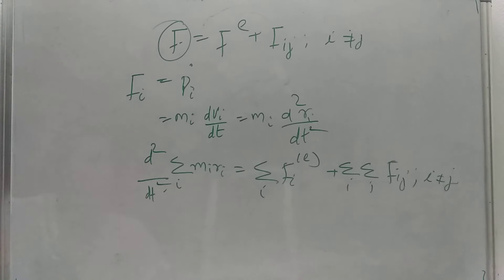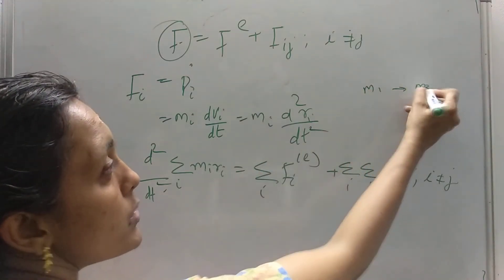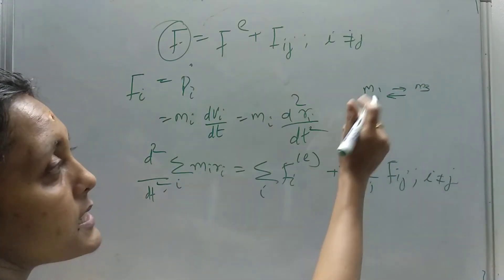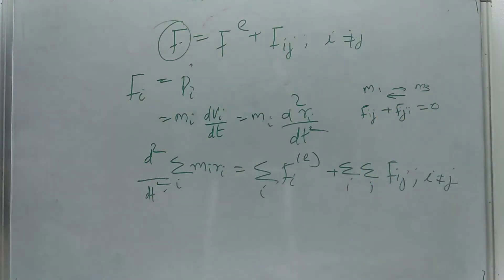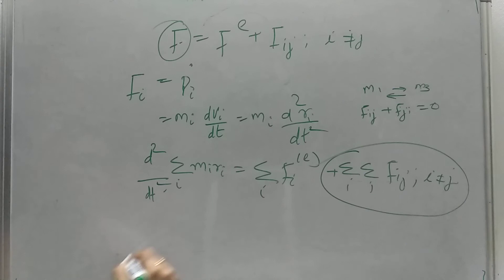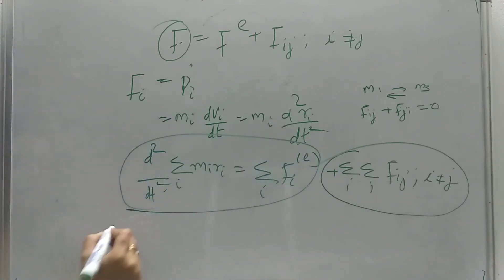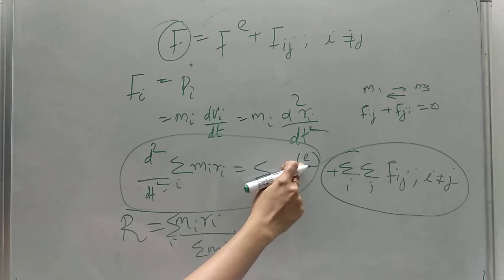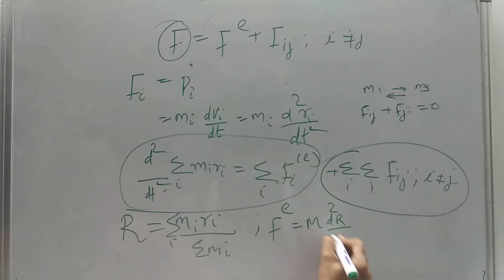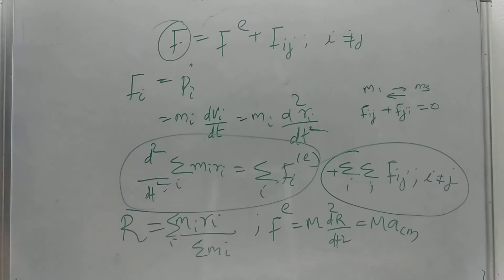Now, we always have equal and opposite forces — Newton's third law. The force M1 exerts on M3 and the force M3 exerts on M1 are equal and opposite, so they cancel out. Since F_ij + F_ji = 0, the internal forces vanish. Our equation reduces to: F_external = M * d²R/dt², which is M times the acceleration about the center of mass.